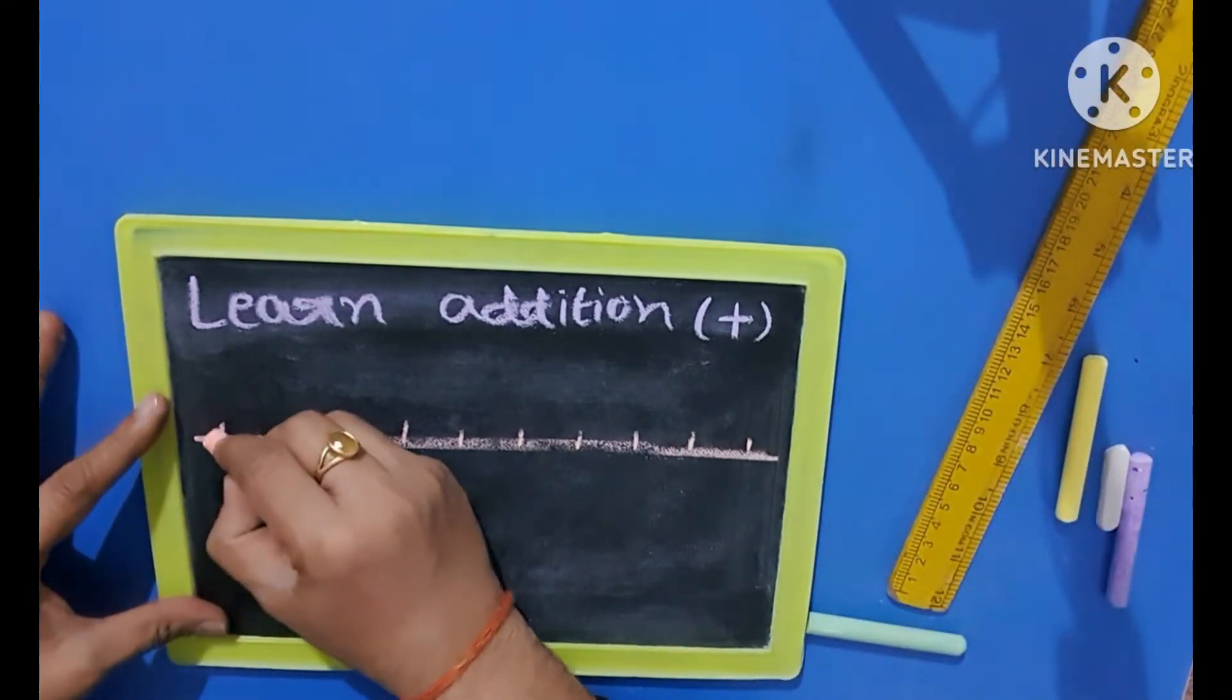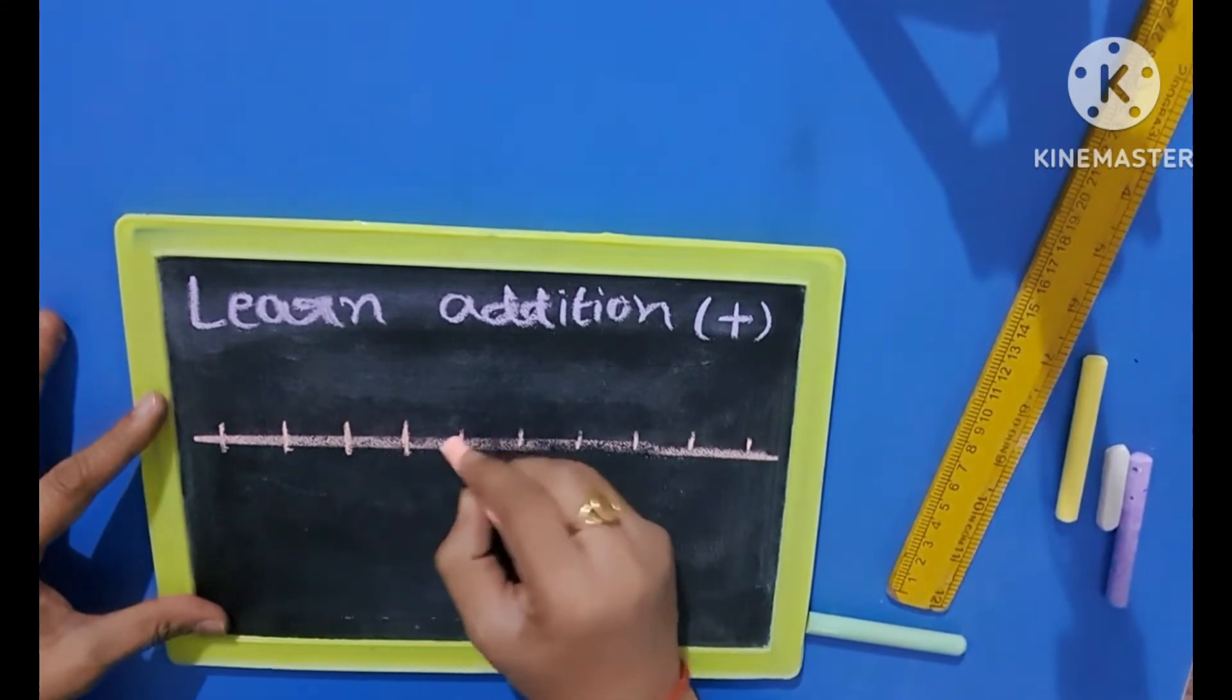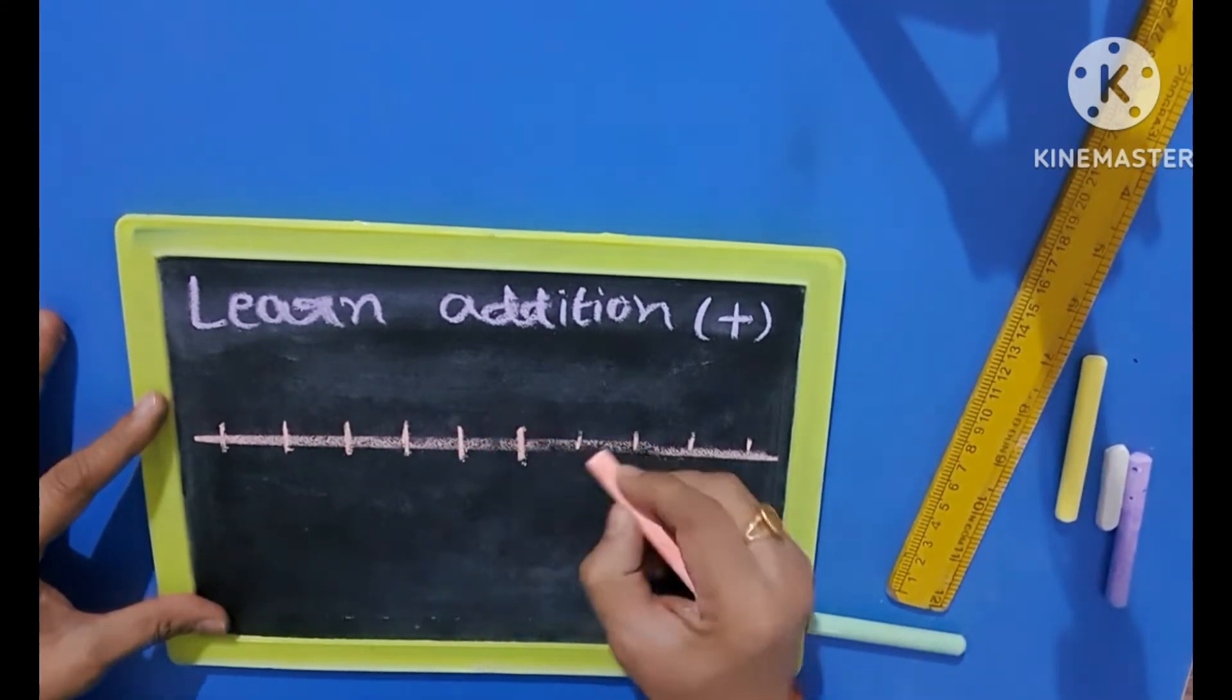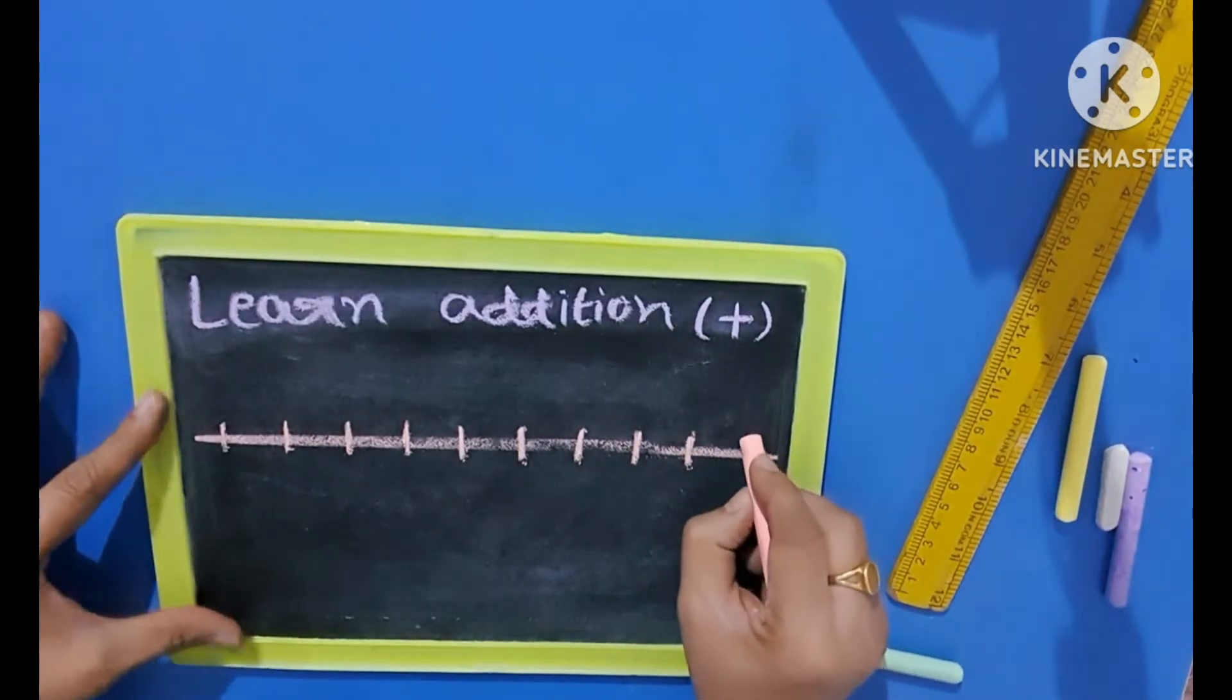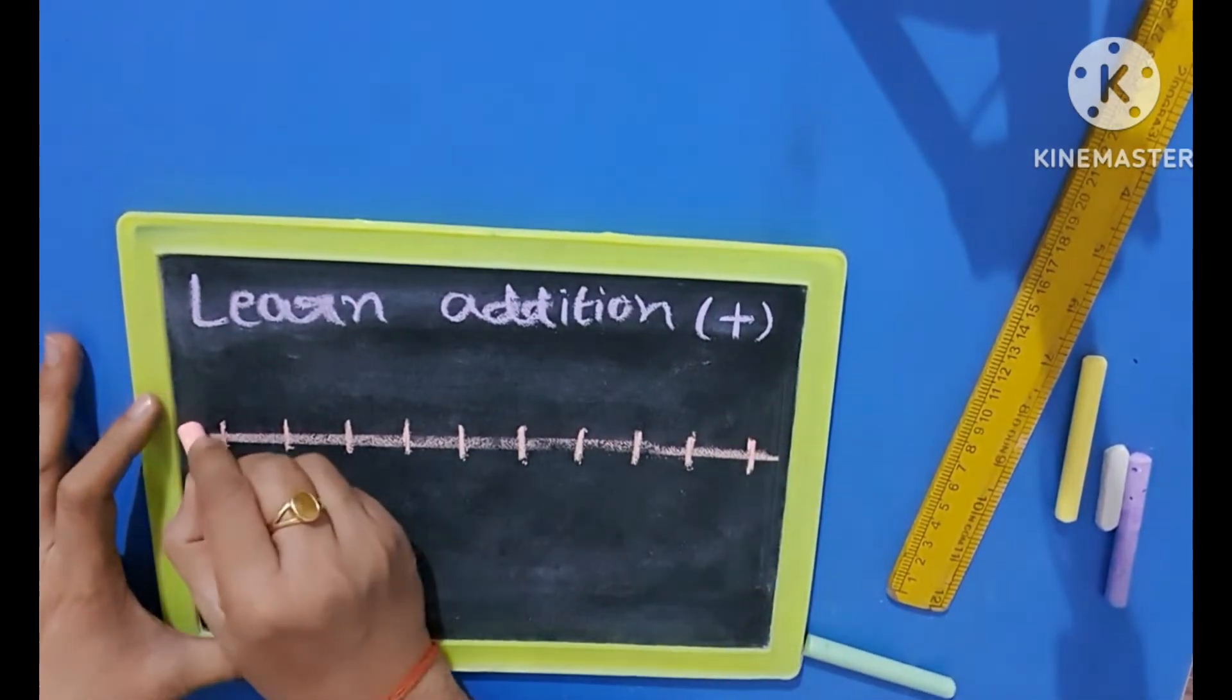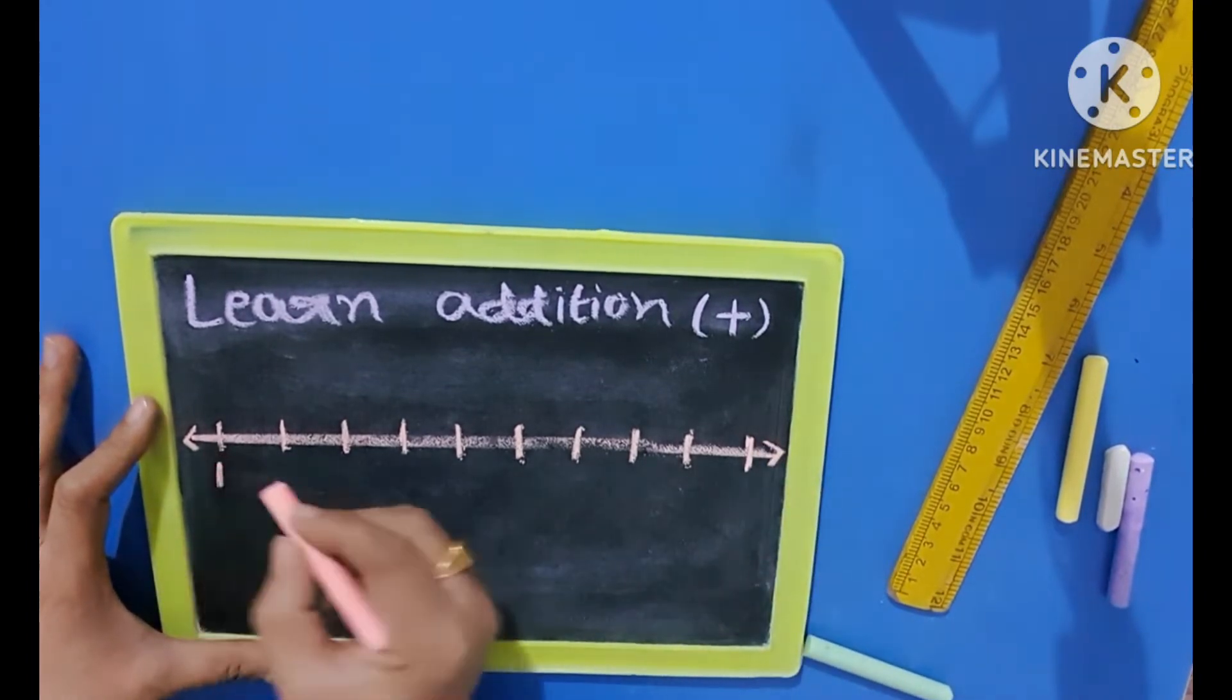So we have made 10 marks and after that we will write the numbers below the line from 1 to 10.